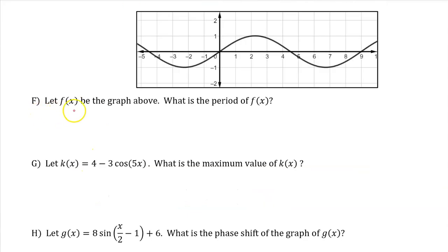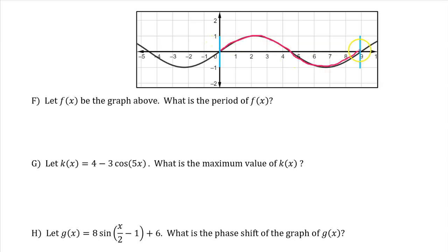Part F. Let f(x) be the graph above. What is the period of f(x)? The period is the length of one cycle of the function. In this case, one cycle has a length of 9. So the period is 9.